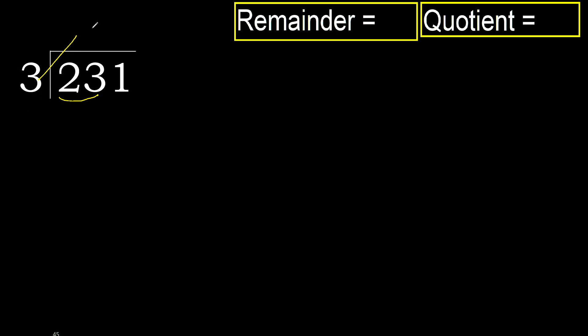3 multiplied by which number is nearest to 23 but not greater? 3 multiplied by 8 is 24 — 24 is greater. So try 3 multiplied by 7, which is 21. 21 is not greater, so we use 7.